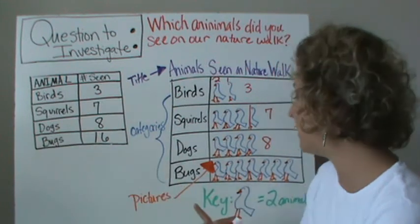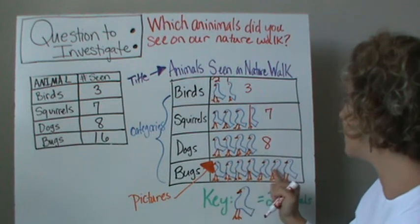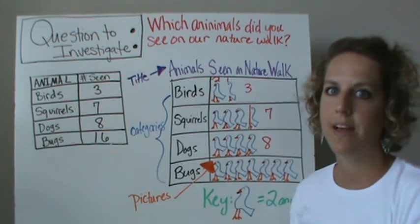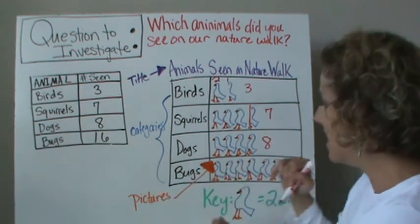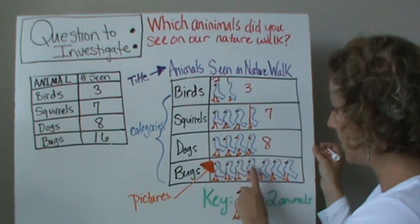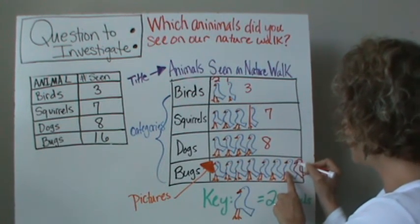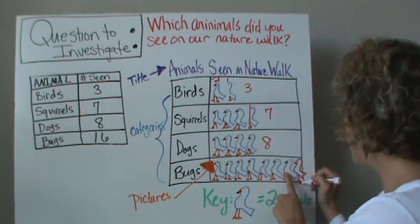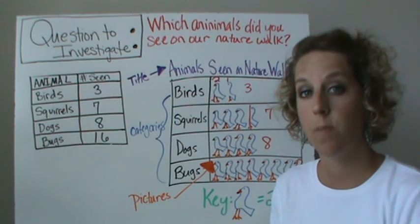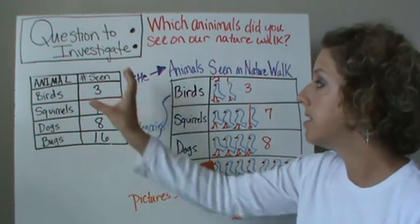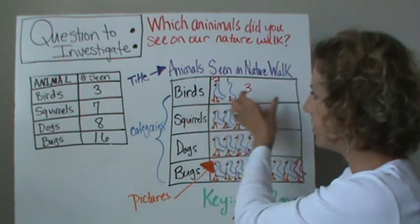For bugs, I said I saw 16: two, four, six, eight, 10, 12, 14. I left out a bird — I wanted it to represent 16. Counting by twos: two, four, six, eight, 10, 12, 14 — I need to add one more bird to the pictograph to make sure it represents 16 bugs. Always go back and double-check your pictograph to make sure it matches the data that you collected. And of course, those were my pictures.